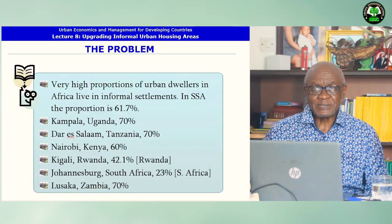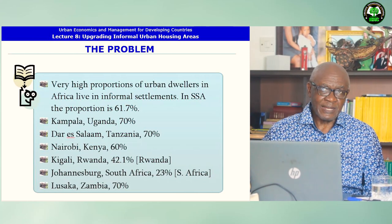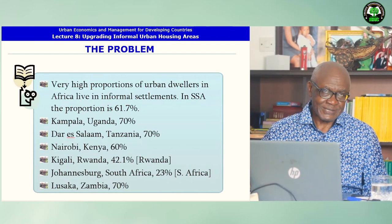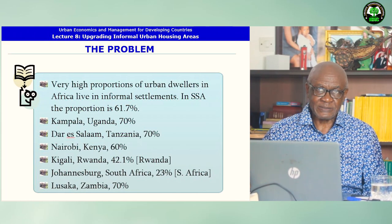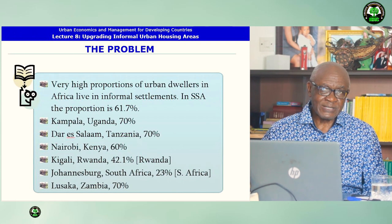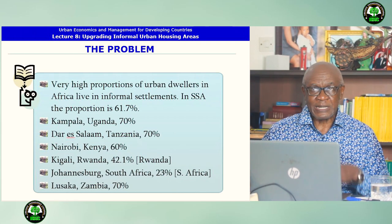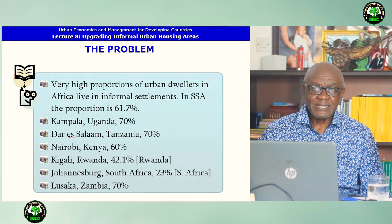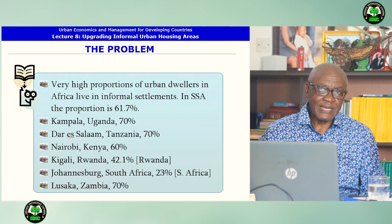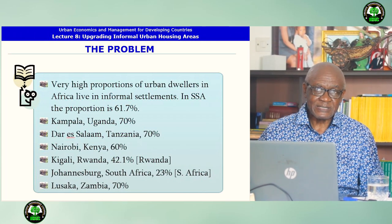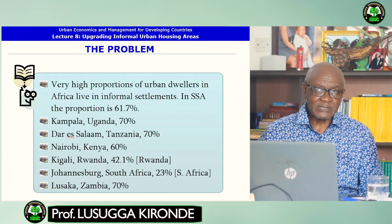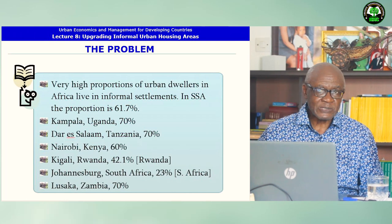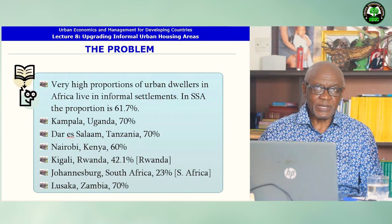Now what is the problem? The problem is that a very high proportion of urban dwellers in Africa live in informal settlements. In Sub-Saharan Africa the proportion is 62 percent. But when you look at individual cities: in Kampala, Uganda it is 70 percent; in Dar es Salaam, Tanzania, 70 percent; Nairobi, Kenya, 60 percent; in Rwanda it is 42.1 percent; in South Africa it is 23 percent; and in Lusaka, Zambia it is 70 percent.